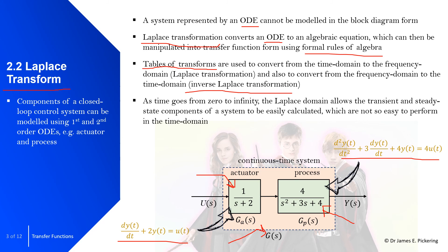There are further things that a transfer function will inform us about — things such as the transient and steady state components of a system or closed loop control system. We can easily determine these without undertaking advanced calculations, which are not so easily done in the time domain. In the frequency domain transfer function, we can quite easily determine the final value of the system in steady state, and also components of the transient response — such as whether it's oscillating, as with a mass-spring-damper. These benefits will be seen in the next three videos and the following series on transfer functions.